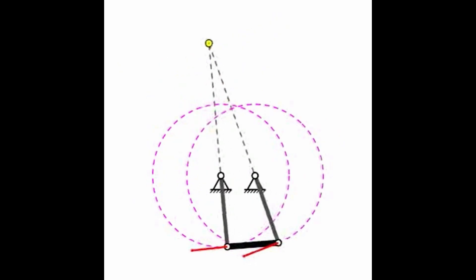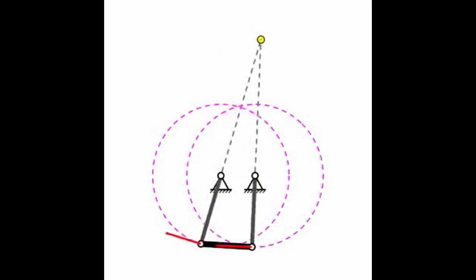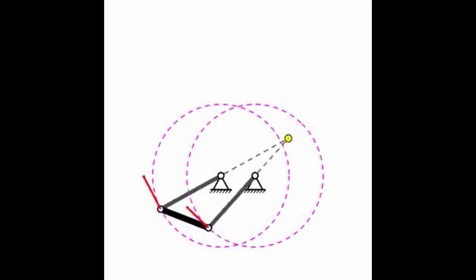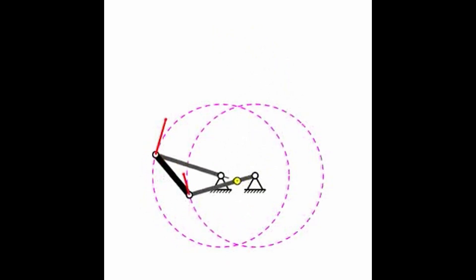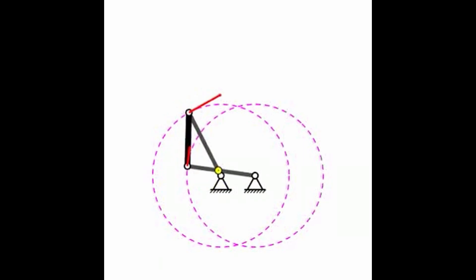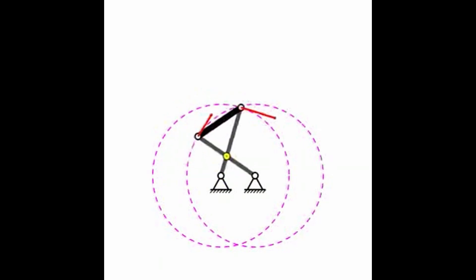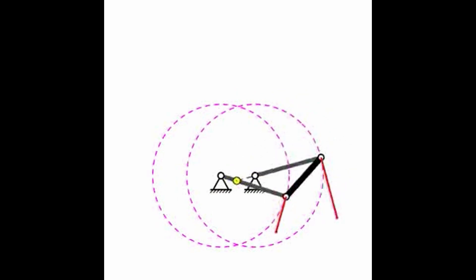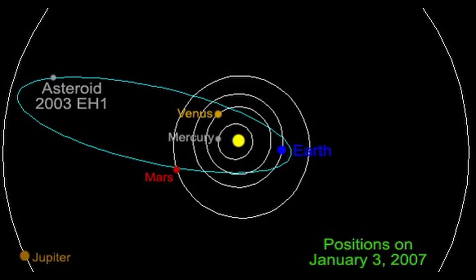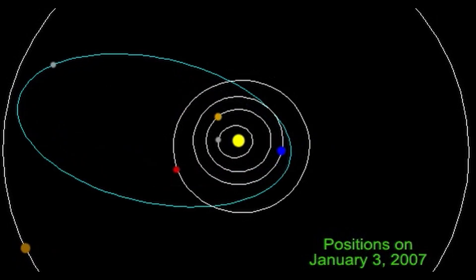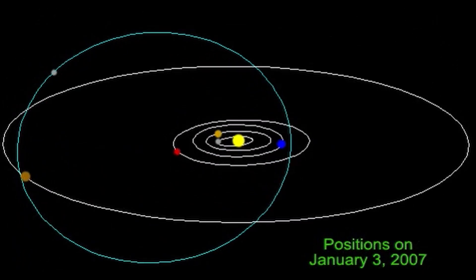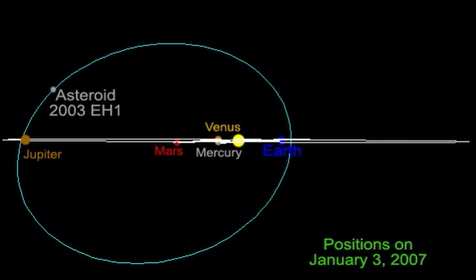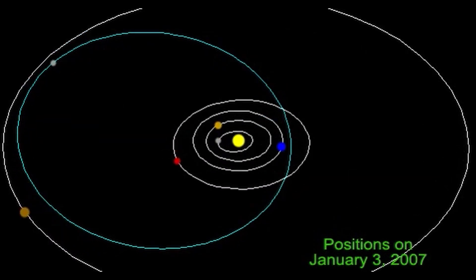The inner product has some properties that make it useful for geometry. It is symmetric: ⟨x, y⟩ = ⟨y, x⟩ for any vectors x and y. It is linear in the first argument: ⟨ax₁ + bx₂, y⟩ = a⟨x₁, y⟩ + b⟨x₂, y⟩ for any scalars a and b and vectors x₁, x₂, and y. It is positive definite: ⟨x, x⟩ > 0 for any vector x, and ⟨x, x⟩ = 0 if and only if x is the zero vector.